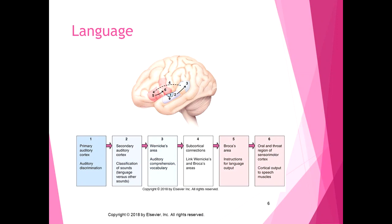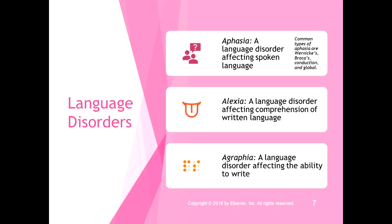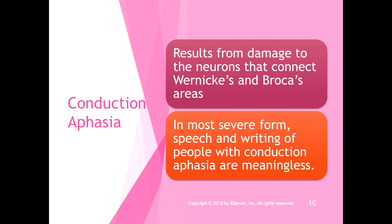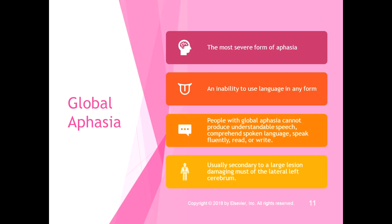Conduction aphasia results from damage to the neurons that connect Wernicke's and Broca's areas — that dotted line on the earlier chart. In the most severe form, speech and writing are meaningless because the person can't connect meaning with output — it's a connection problem. Global aphasia is the most severe form of aphasia: the inability to use language in any form. People cannot produce understandable speech, cannot comprehend spoken language, cannot read, and cannot write. It's usually secondary to a large lesion damaging most of the lateral left cerebrum.